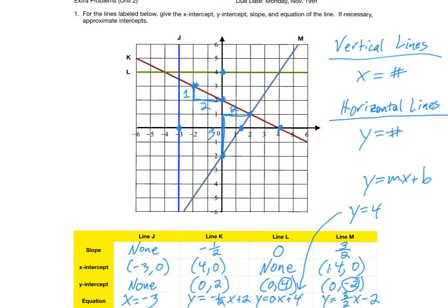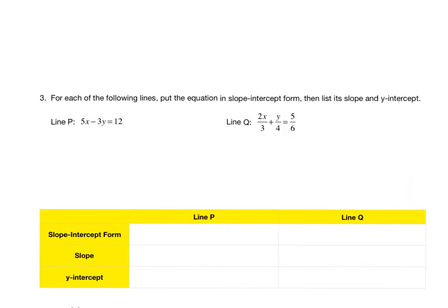Let's take a look at another example. In this example, we are given equations of the lines instead of graphs of the lines. So we've got line P and line Q, and we want to write them in slope-intercept form, and then also state what their slope is and what their Y-intercept is. So to be in slope-intercept form, the key thing is Y has to be totally isolated.